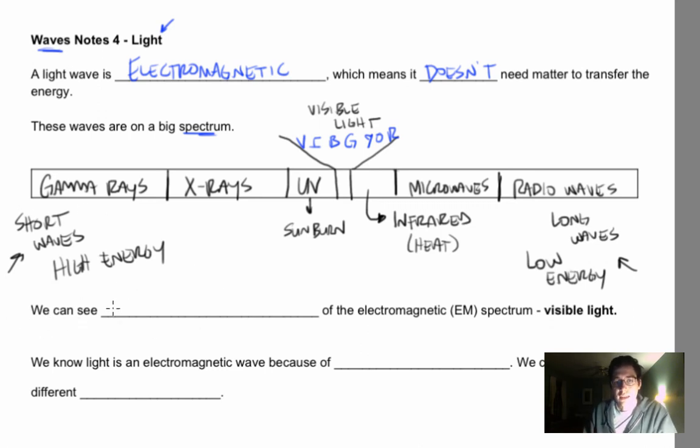So really what this means is that we can see a tiny portion, just a very small slice of the EM spectrum. And that's what we can see. We can experience other kinds. Finally, the last question is, we know light's electromagnetic because of something called refraction.